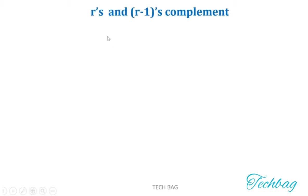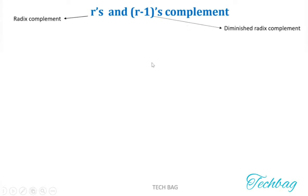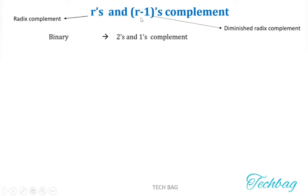The other name for R's complement is radix complement. The other name for R-1's complement is diminished radix complement. For the binary number system, there are 2's complement and 1's complement, because in the binary number system the radix value — which is the base — is 2.